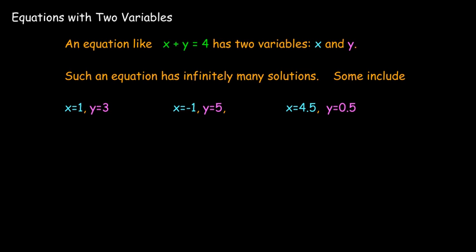Any x and y pair which will add up to 4 would be a solution. So x equals 1 and y equals 3, or x equals negative 1, y equals 5, x equals 4.5 and y equals 0.5.